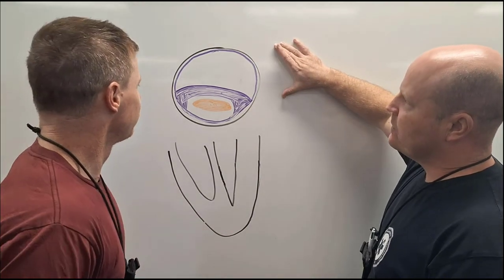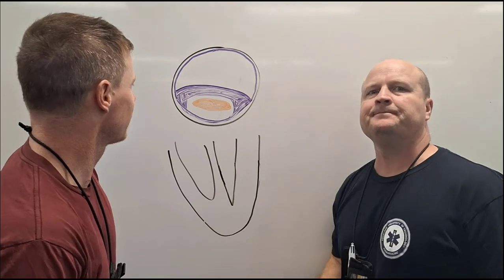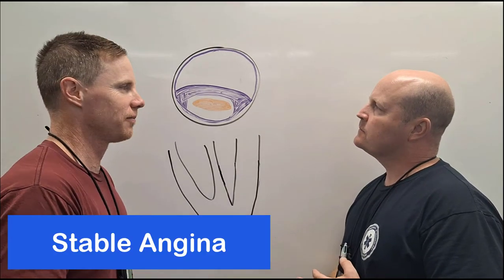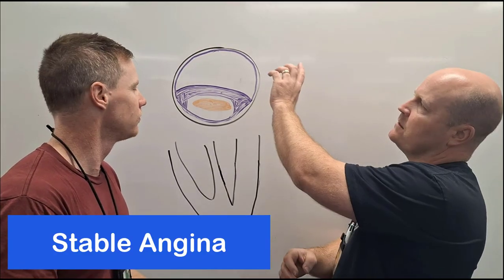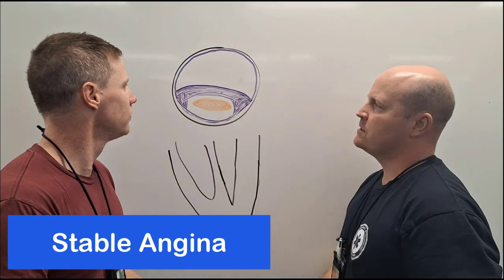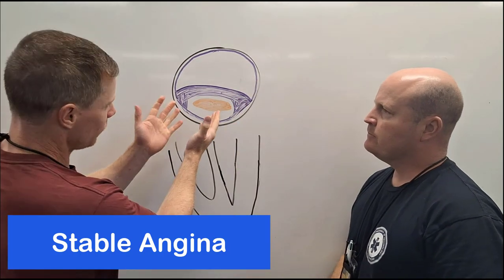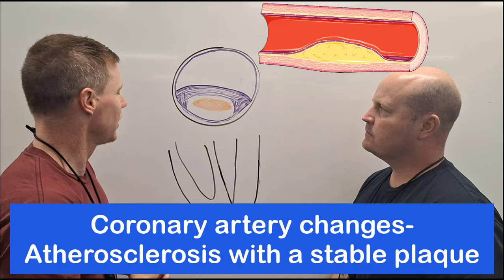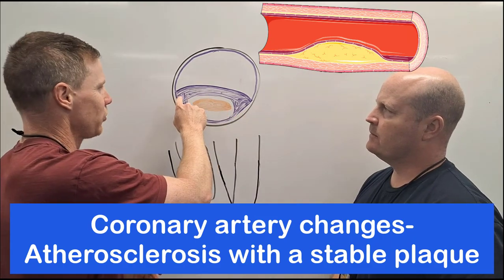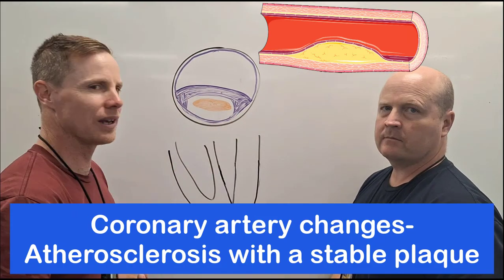Looking at this coronary artery, what pathology is going on here? I reckon that's stable angina. Okay, what's the pathology? What's happening inside? It looks like we've got atherosclerosis here and we've got a thick fibrous cap, quite a stable looking plaque.